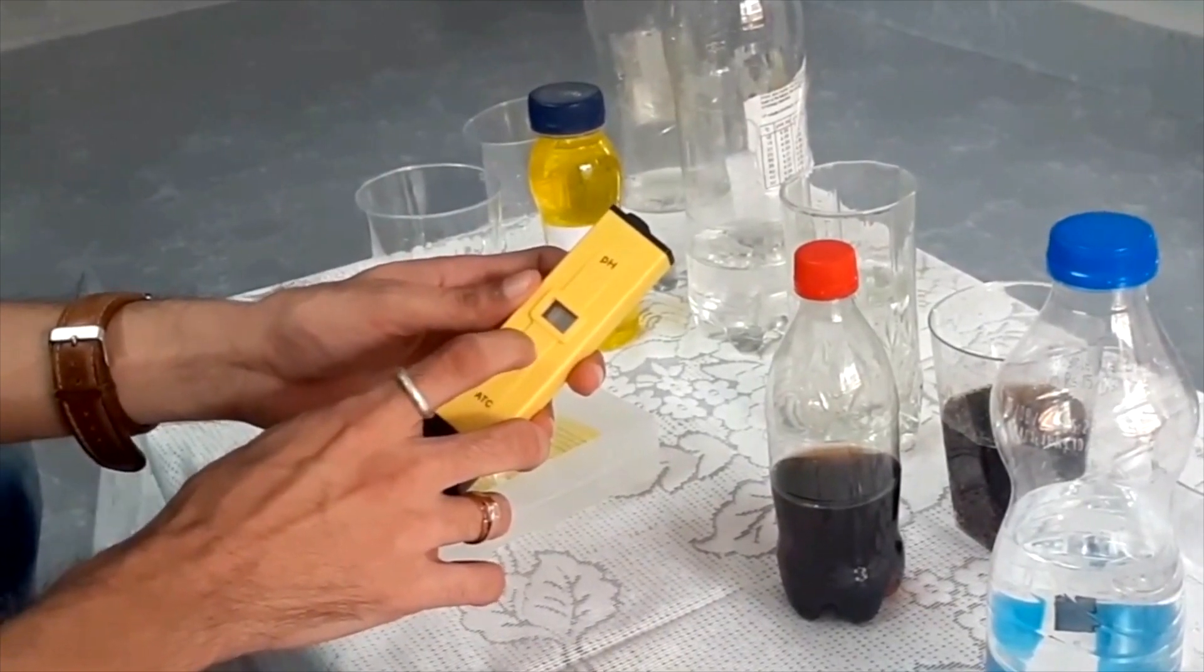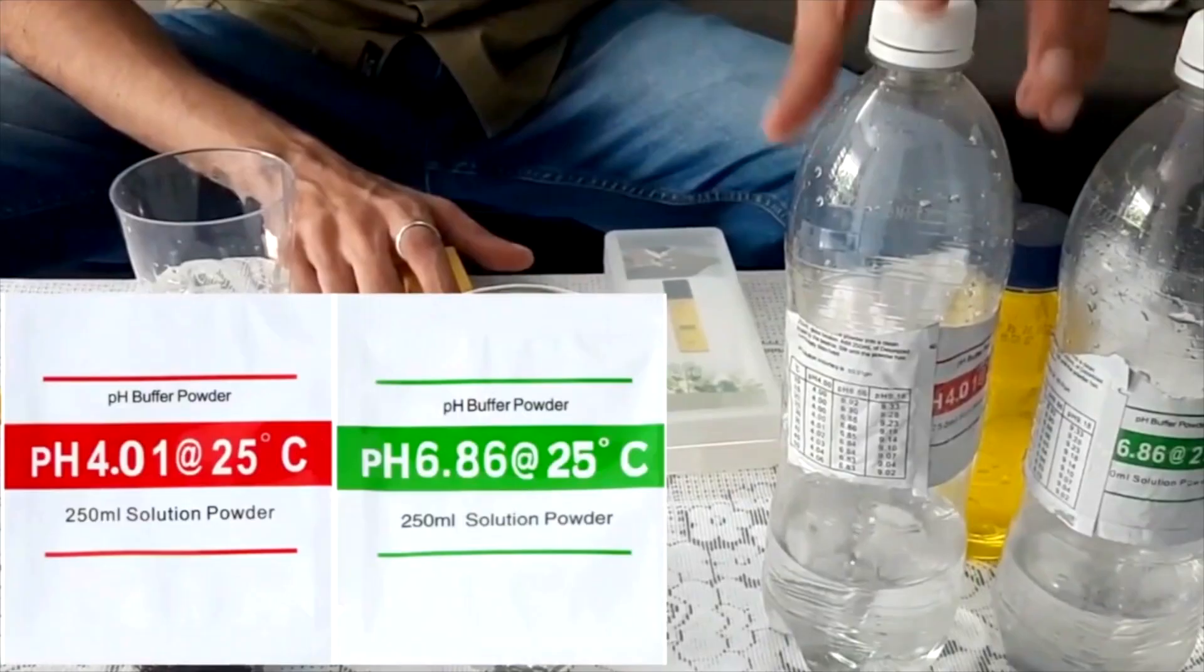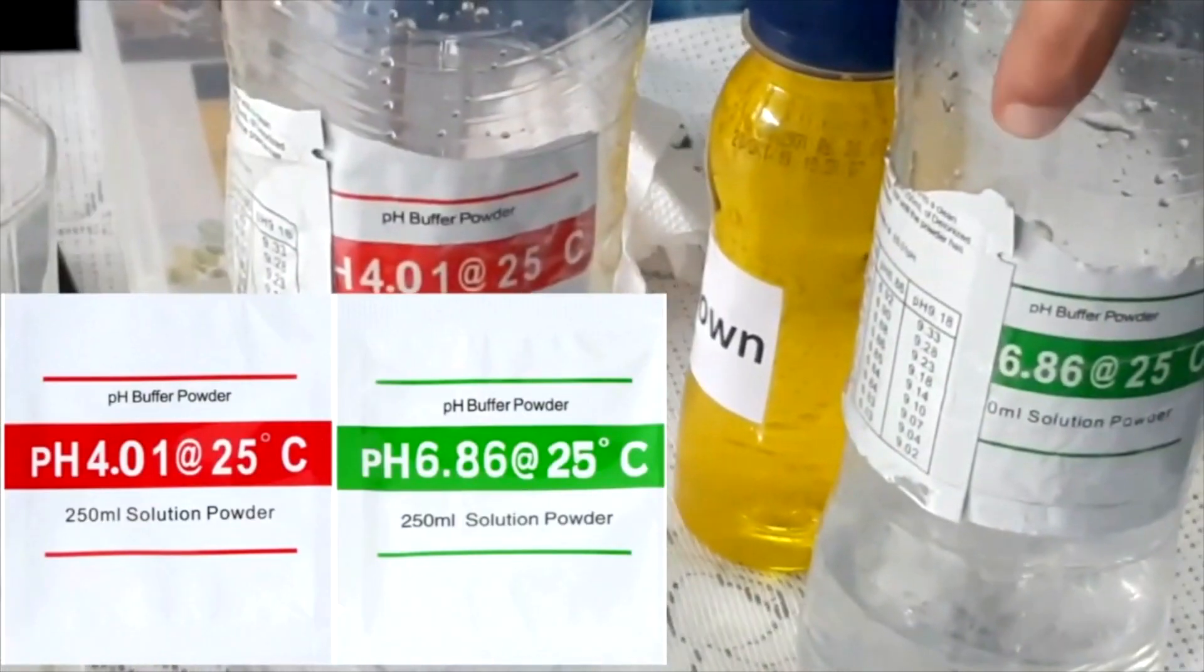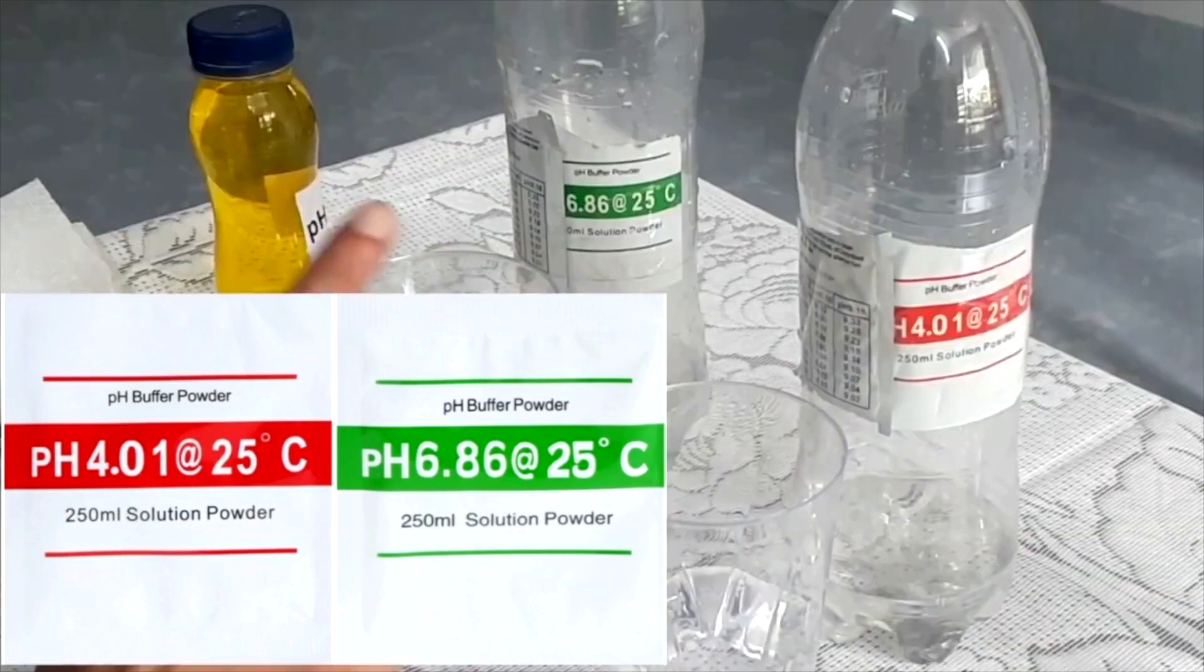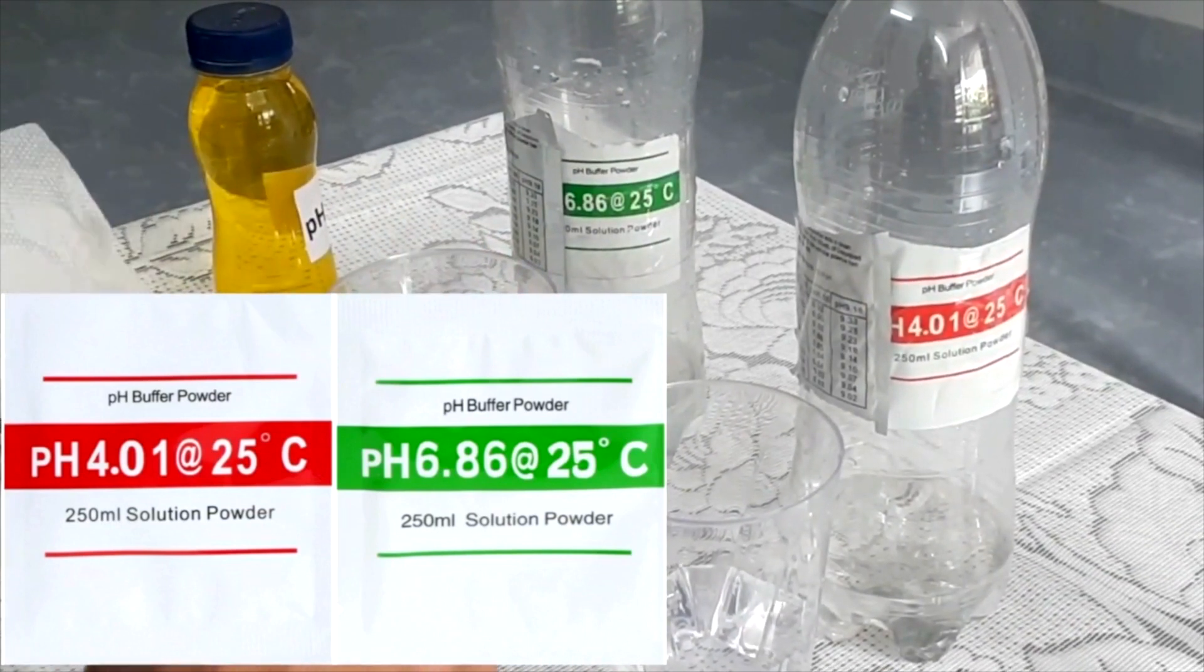We will calibrate the pH meter using two buffer solutions. First is 4.01 and second is 6.86. You can buy this online but I would recommend checking nearby shops. Each packet is mixed in 250 ml 0 ppm distilled water.